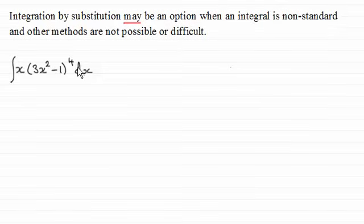And here I've got a typical example where to integrate x times 3x squared minus 1 to the power 4, I could opt to expand the bracket but that's going to be quite lengthy and then I've got to multiply through by x. And then that's going to mean I've got to integrate lots and lots of terms. Well, we can use a method called integration by substitution for something like this.